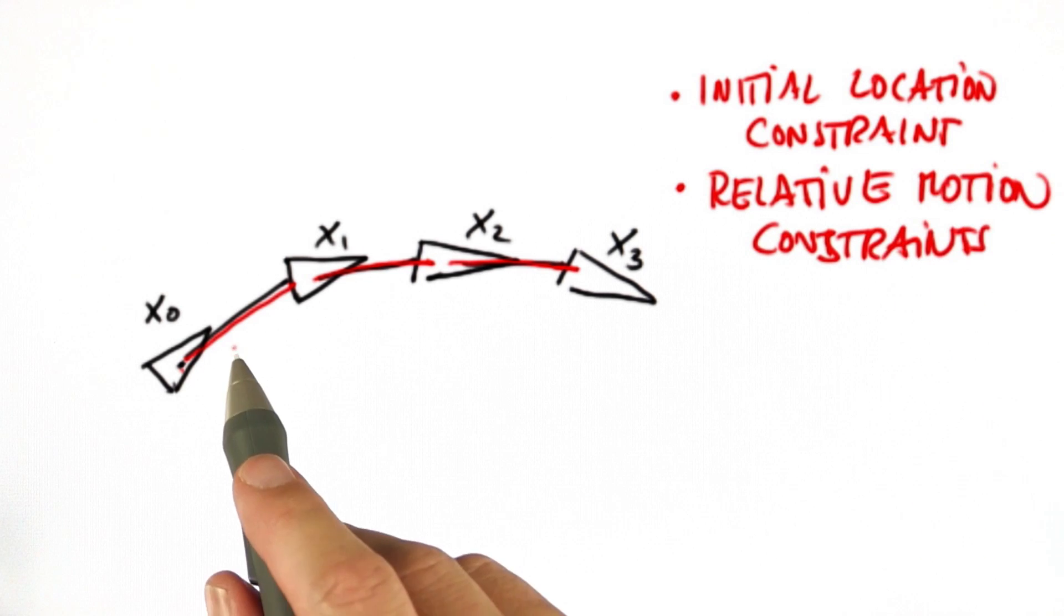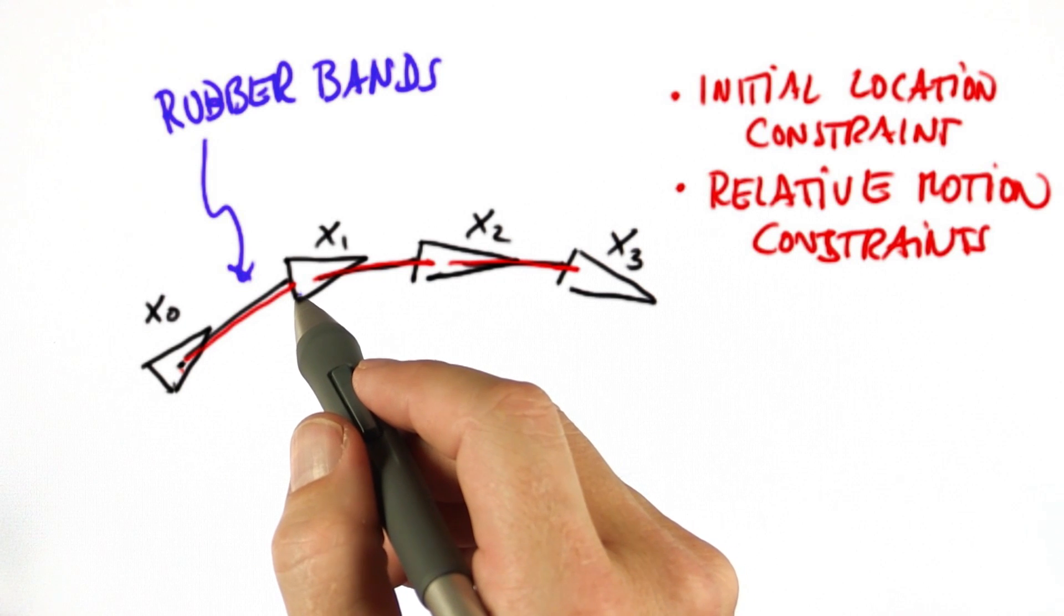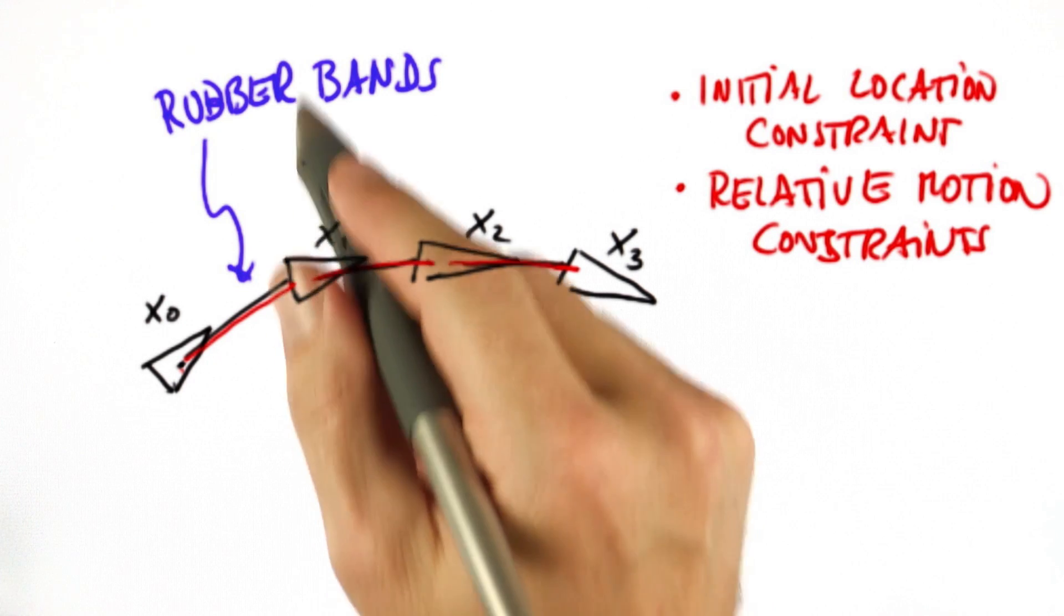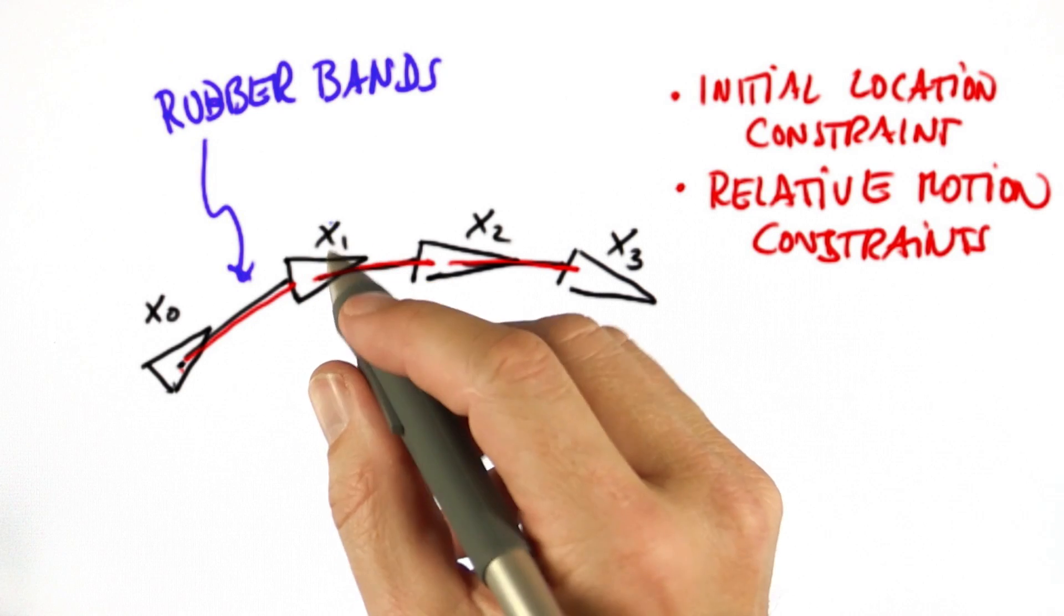You can think of those as rubber bands. In expectation, this rubber band will be exactly the motion the robot sensed or commanded. But in reality, it might have to bend it a little bit to make the map more consistent.